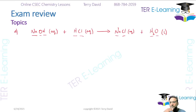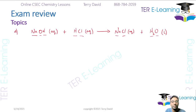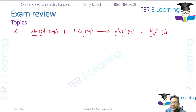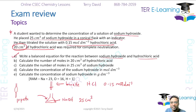This is a well-known equation, so please make sure you know it: sodium hydroxide plus hydrochloric acid gives sodium chloride plus water. You might typically get one or two marks for that. That's the next part — part B: calculate the number of moles in the 20 cm³ of hydrochloric acid.